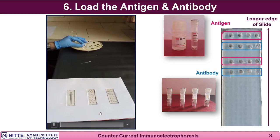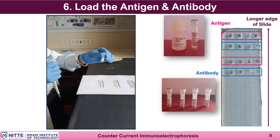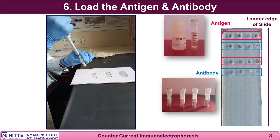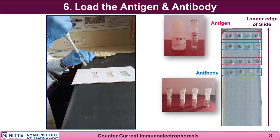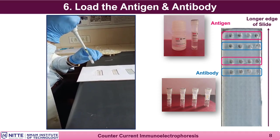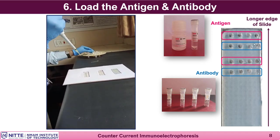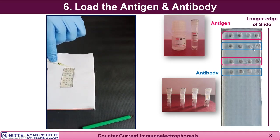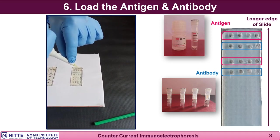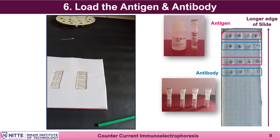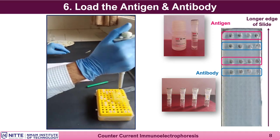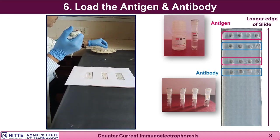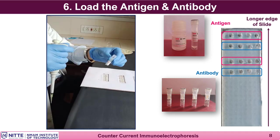Load 10 microlitres each of antigen and antibody; do not overflow the well. The antigen side should be on the left and the antibody side on the right. After loading, always dedicate one pair of wells at the bottom as a control, loading known antigen and known antibody.